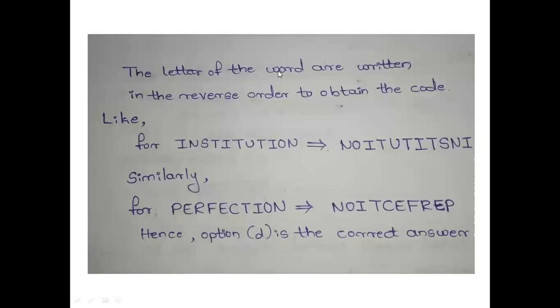The answer is, the letters of the word are written in the reverse order to obtain the code. Like for institution, I-N-S-T-I-T-U-T-I-O-N. It is now reverse order like NOITUTITSNI.